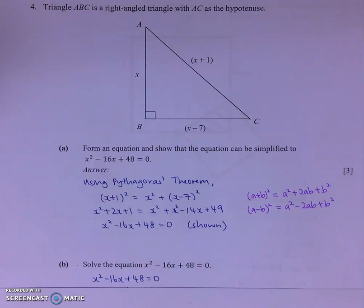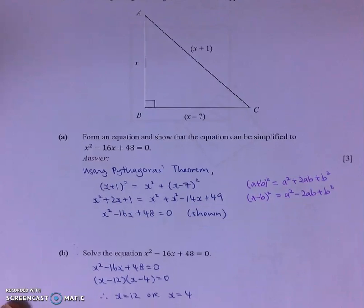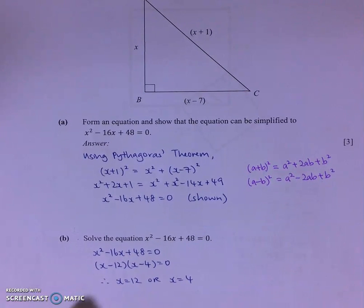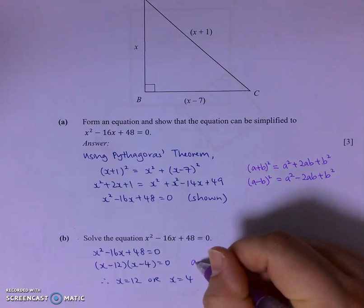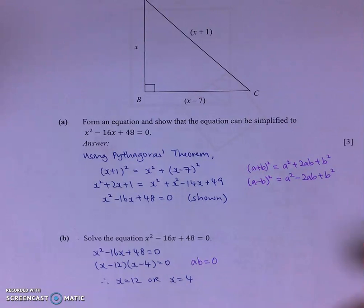Solving the equation, I'll factorize. X squared minus 16X plus 48 will give me this. And since I have A multiplied by B equals to 0, I have A equals to 0 or B equals to 0. Simplifying will give me these two answers.